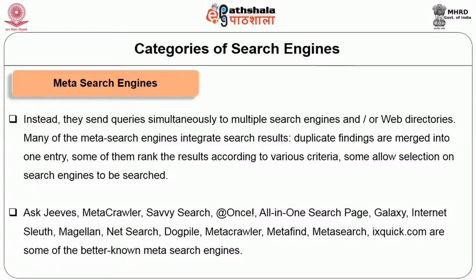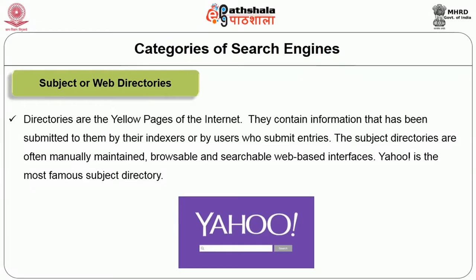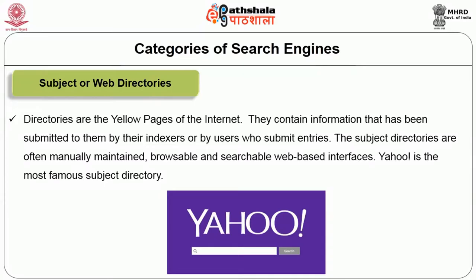Subject or web directories are like the yellow pages of the internet. They contain information submitted by their indexers or by users who submit entries. Subject directories are open, manually maintained, browsable, and searchable through web-based interfaces. Yahoo is one of the most famous subject directories.